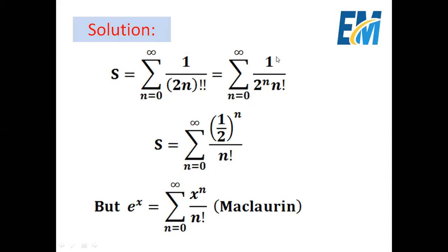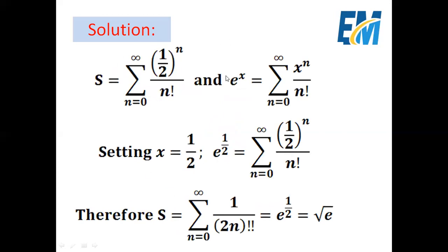Now 1 over 2^n can be written as (1/2)^n, and we have n factorial in the denominator. Let's recall the Maclaurin expansion of e^x: e^x equals the summation from n equals 0 to infinity of x^n over n factorial. Comparing with our expression for s, we set x equals 1/2, giving e^(1/2) equals the summation from n equals 0 to infinity of (1/2)^n over n factorial. So s equals e to the power one-half.